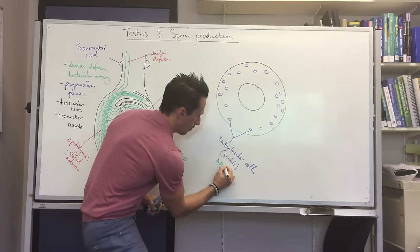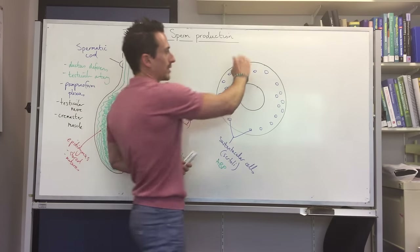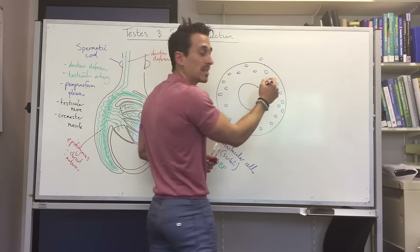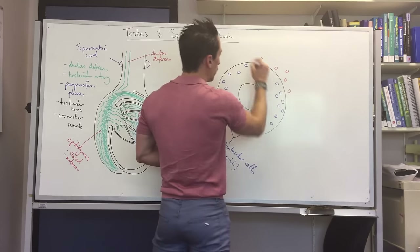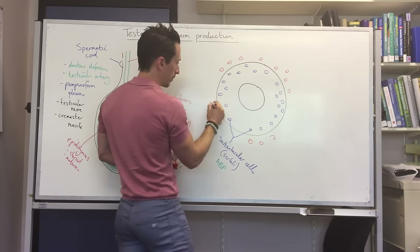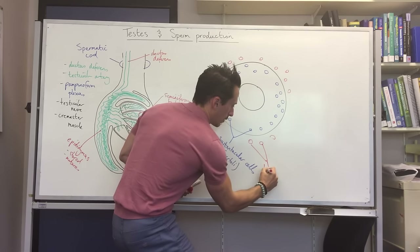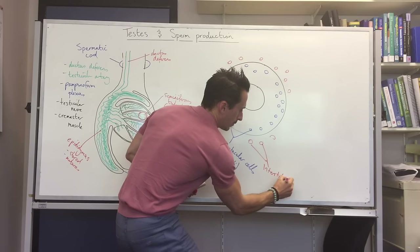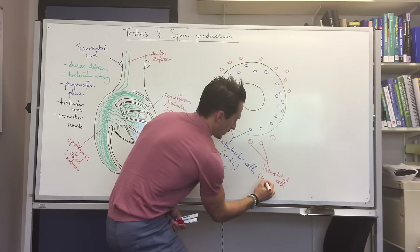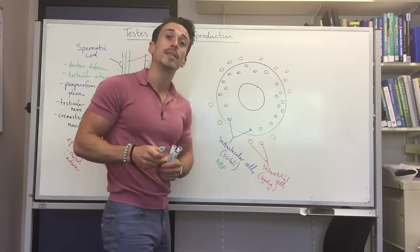In addition, there are cells that sit outside the seminiferous tubule walls, in the interstitial space — these are called interstitial cells, or Leydig cells. Leydig cells produce testosterone.